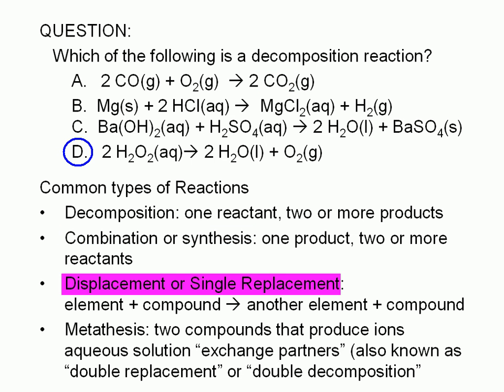Choice B is an example of a displacement or single replacement reaction. In a displacement reaction, an element displaces another element from a compound. So the reactants are an element, such as magnesium in choice B, and a compound, such as hydrochloric acid. In choice B, the element magnesium displaces the element hydrogen from the hydrochloric acid. Magnesium ends up being part of a compound in the product, and hydrogen is liberated as a free element.